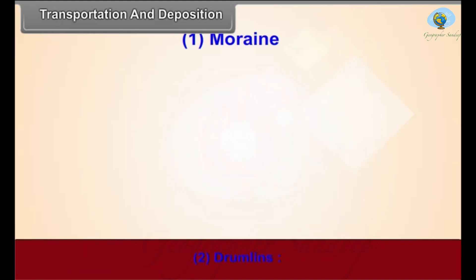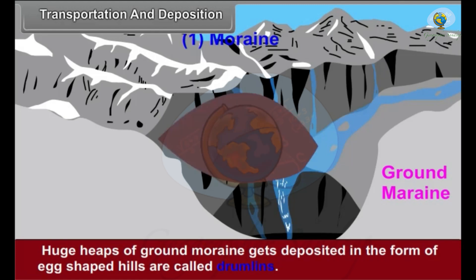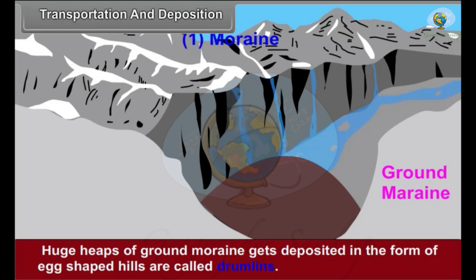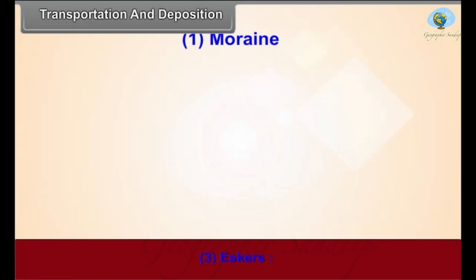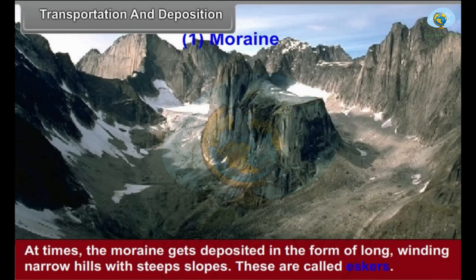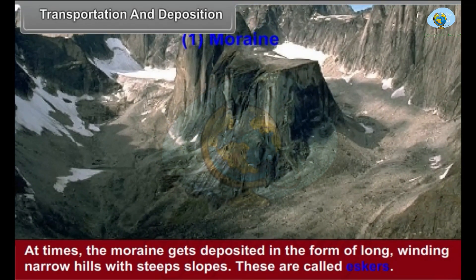Drumlins: Huge heaps of ground moraines deposited in the form of egg-shaped hills are called drumlins. This feature is found in northern Ireland and the North European plains. Eskers: At times the moraine gets deposited in the form of long, winding, narrow hills with steep slopes. These are called eskers.